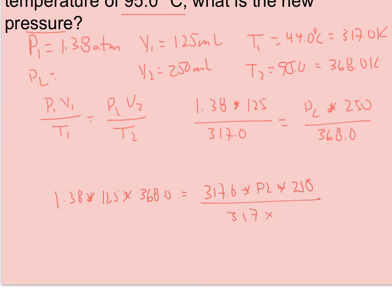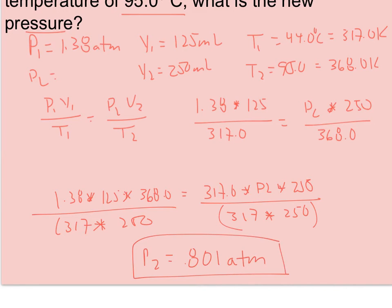So when I divide, I'm going to have the 317 times the 250 that I have to divide on each side. I'll use my star there so my x's don't confuse you. And I'm coming up with P2 equal to 0.80. And I could hang on to actually one more sig fig here, 0.801. And when I look back, I see that my first pressure was in atmospheres. So this will also be in atmospheres.